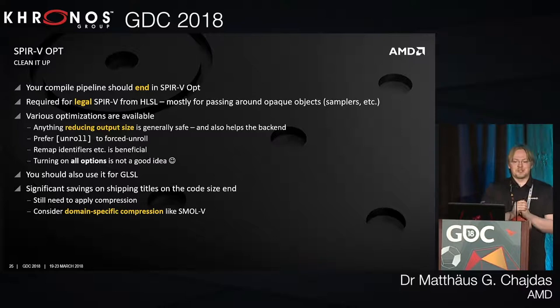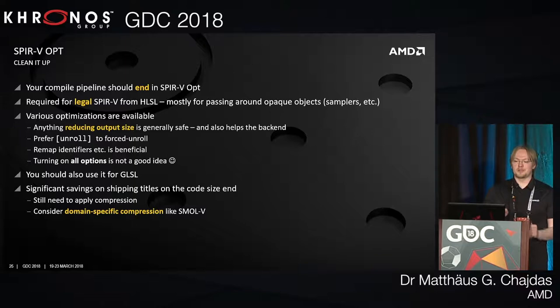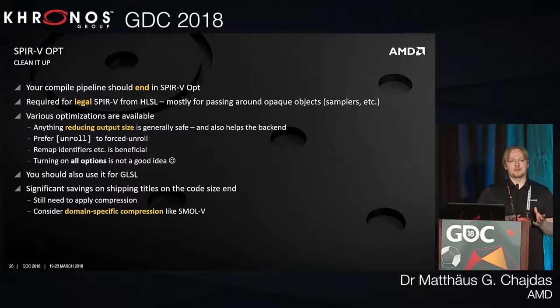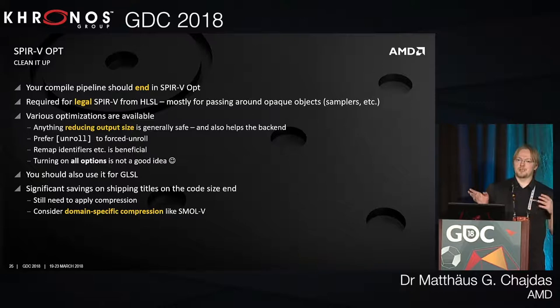SPIR-V Opt — we've covered this before, but I'm going to cover it again because it's so important. If there's one thing you take away, it should be: if you have a compilation pipeline, it should be ending in SPIR-V Opt before you pass it into the driver. It's required to produce legal SPIR-V anyway, and it also does optimizations that reduce output size. Anything that makes your SPIR-V smaller after the optimizer is generally a safe assumption that it will also run faster. Even if it doesn't make it run faster, it will at least make your compile time faster when the game loads. There is no excuse not to use SPIR-V Opt — you should always be using it.